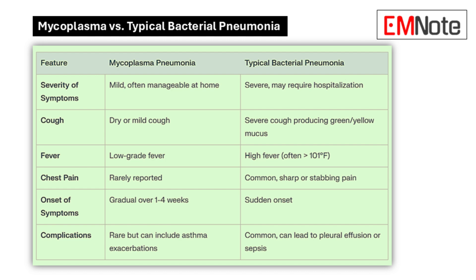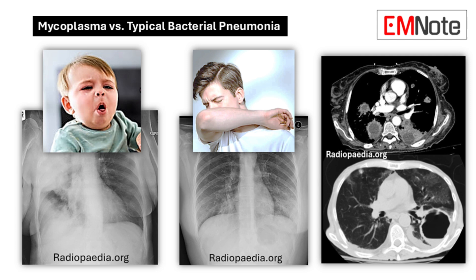Just asking the patient about the duration and progression of symptoms can offer crucial insights. A history of slowly worsening symptoms over a couple of weeks is more suggestive of mycoplasma than a sudden onset of high fever and productive cough. We also can't forget about pediatric patients. Young children with mycoplasma pneumonia can sometimes present with atypical symptoms like diarrhea, sneezing, or wheezing — especially when classic respiratory symptoms aren't as prominent. Children can present with a wider range of symptoms, so a thorough understanding of all potential manifestations is critical for an accurate diagnosis.